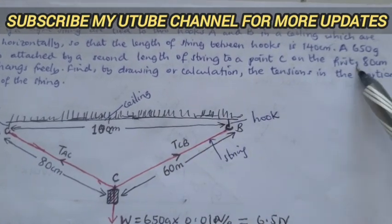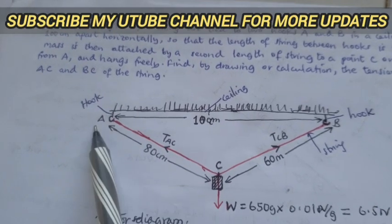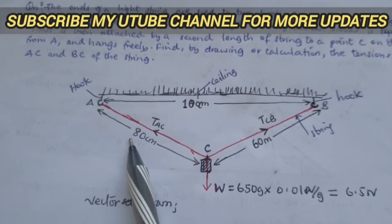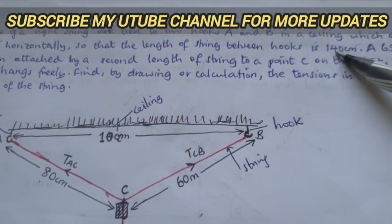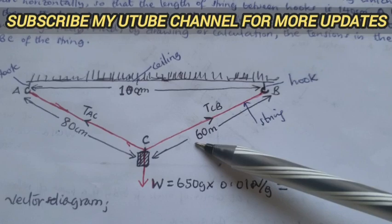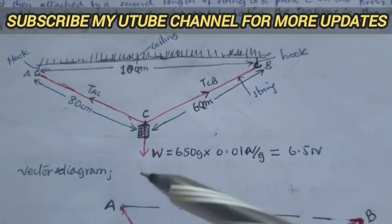Hence, we will have the two parts now. It is A,C and B,C. A,C 80 centimeters, while the remaining centimeter from 140 centimeters of the string is 60 centimeters. Sorry, not meter. 60 centimeters.